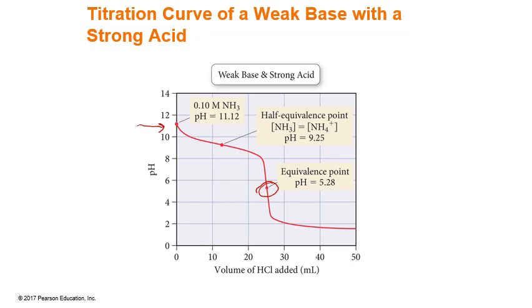Because it's acidic, that means that our conjugate acid of our weak base has a pH less than 7, and this helps to tell us that it is a weak base being titrated with a strong acid.